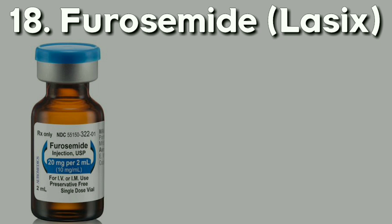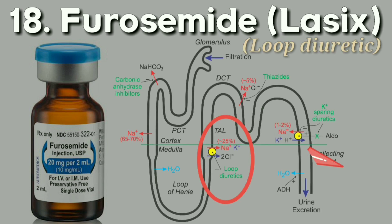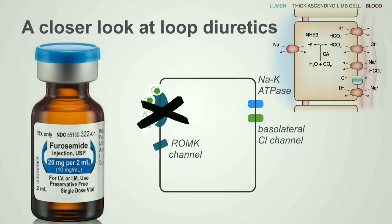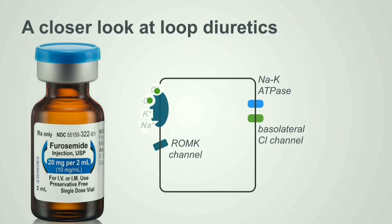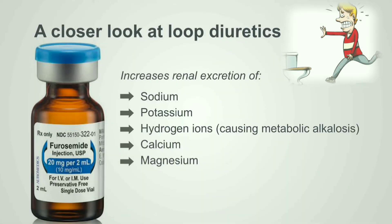Furosemide, popularly known as Lasix, is a loop diuretic. It blocks absorption of sodium and chloride from the loop of Henle, which causes a profound increase in urine output. At the thick ascending limb of the loop of Henle, furosemide blocks the chloride slot and shuts down the sodium-potassium-2 chloride transport, increasing renal excretion of sodium.